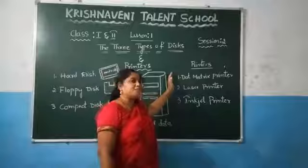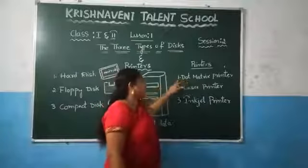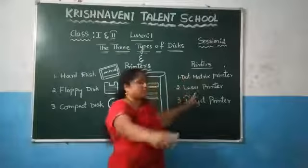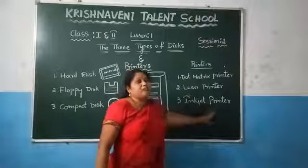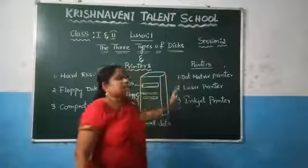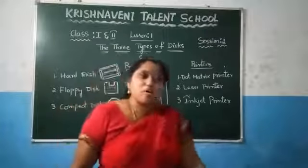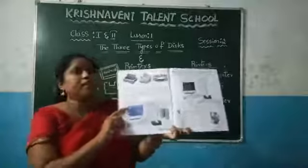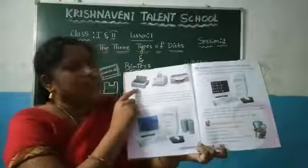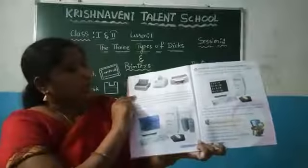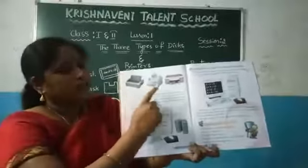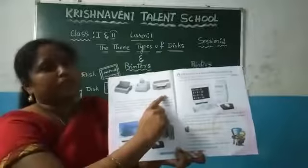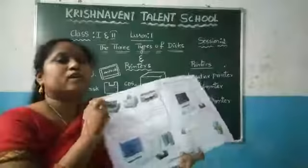So how many types of printers are there? The first one is dot matrix printer, laser printer, and inkjet printer. So these are three types of printers. In your textbook also they are available. Now let us look at the pictures given in the textbook closely. This is the dot matrix printer, this is a laser printer, and this is an inkjet printer.